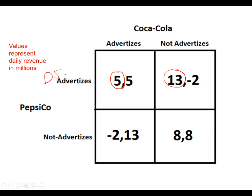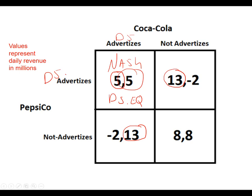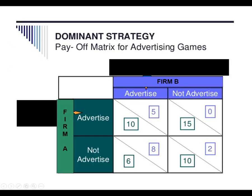What about Coke? If Pepsi advertises, Coke can make $5 million or lose $2 million — they're going to advertise. And if Pepsi doesn't advertise, Coke should advertise because $13 million is bigger than $8 million. So this is also Coke's dominant strategy. This is both the Nash equilibrium and the dominant strategy equilibrium. And this, of course, is another version of the Prisoner's Dilemma because this outcome is worse than the cooperative one, but both firms have a dominant strategy to advertise.